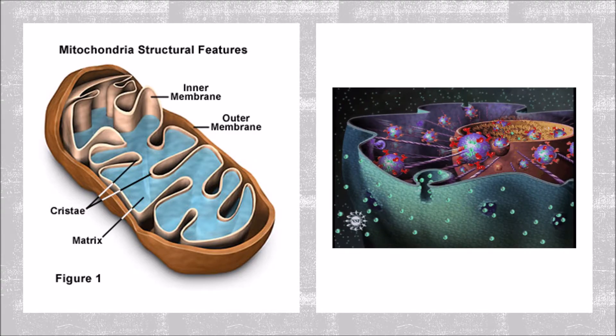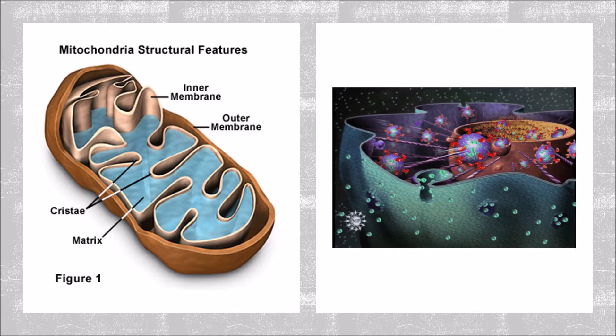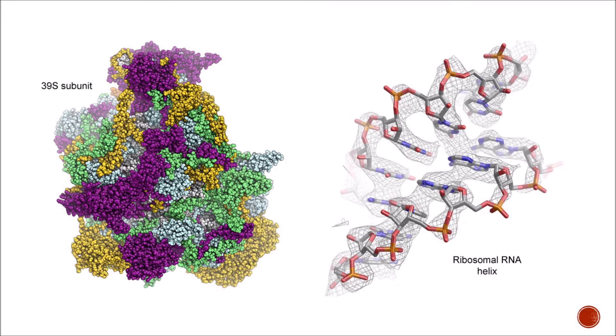There are ribosomes not only in the cytoplasm, but also in the mitochondria. These ribosomes are called mitoribosomes, as we discussed earlier, and they look like this. These ribosomes are different from the cytoplasmic ribosomes, because they're in charge of creating proteins specifically for the mitochondria.